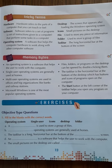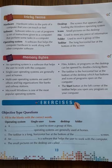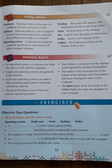Desktop is the screen that appears after loading the Windows operating system. Icons are small pictures on the desktop. Files are used to store any piece of information, and when we group files together that is called a folder. The taskbar is the long horizontal bar at the bottom of the screen, which shows icons of programs that are open on your computer.